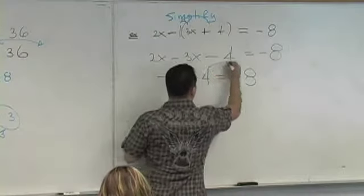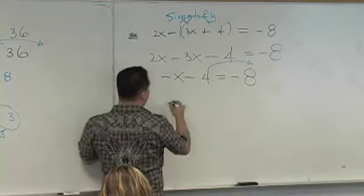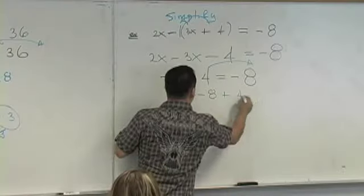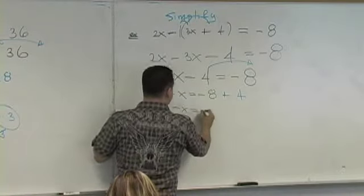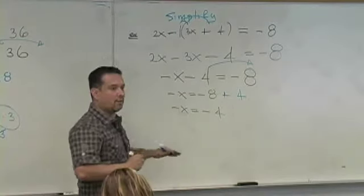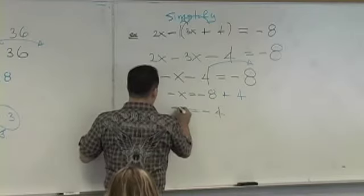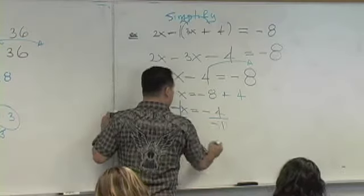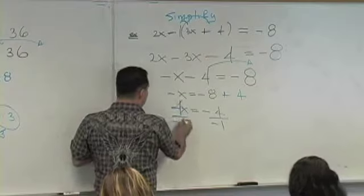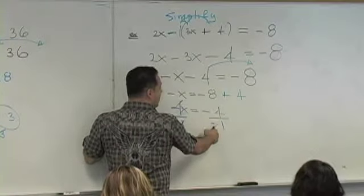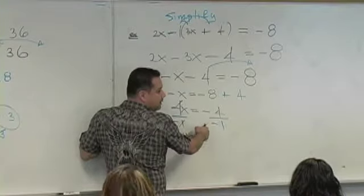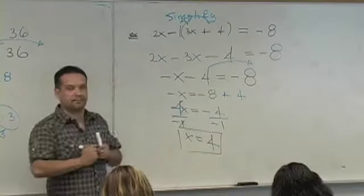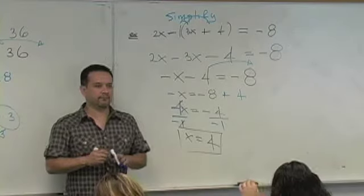What do you want to do? Transfer your 4. So you get negative x becomes negative 8 plus 4. Negative x is negative 4. What does that negative x mean? It's negative 1 times x. Divide both sides by negative 1. Cancel. X is negative 4 divided by negative 1. Positive 4. 4 over 1 is 4.